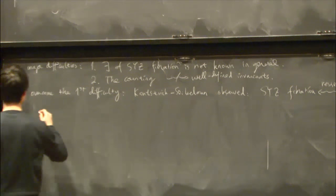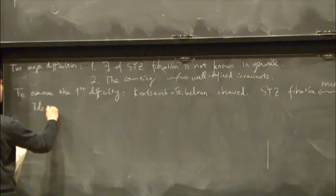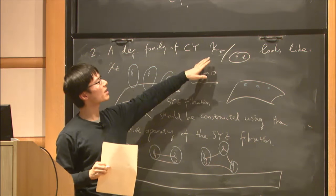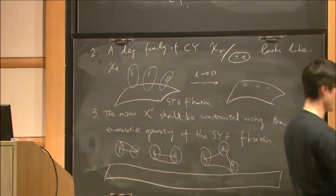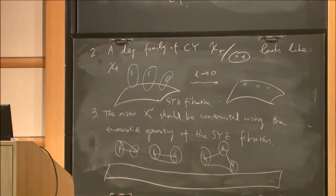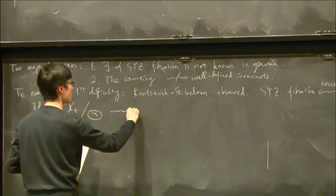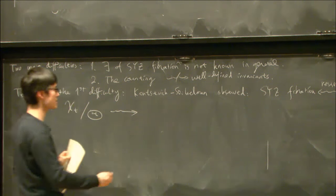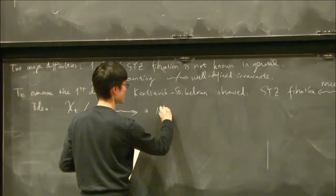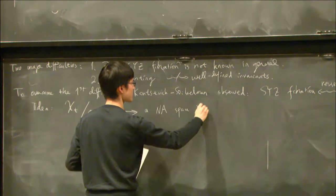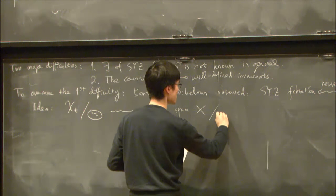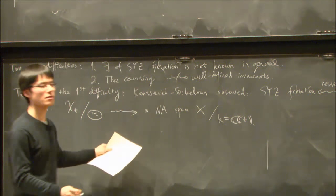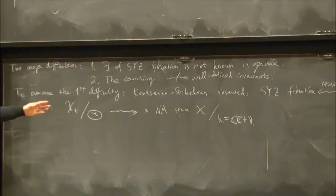The idea is simple. When we have this family X_T over the punctured disk, we obtain naturally a non-Archimedean analytic space X defined over the field of Laurent power series, which is a non-Archimedean field.